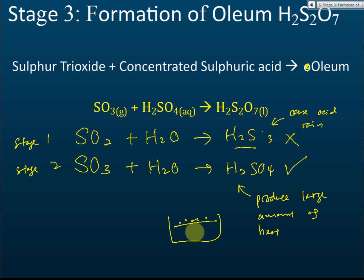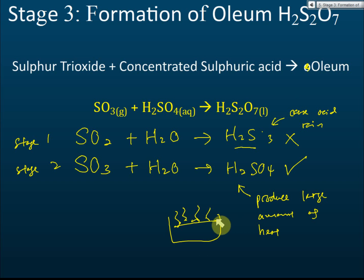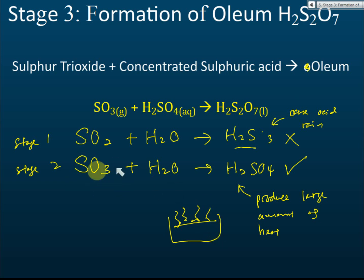The heat released can boil the sulfuric acid, causing it to become vapor. This vapor is highly corrosive and very dangerous — it can escape from containers and is very hard to control. In the lab, you can dissolve a small amount of sulfur trioxide in a large amount of water and that should be okay, because the heat released will not boil the water.